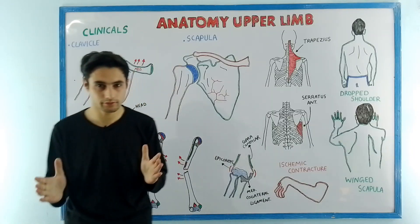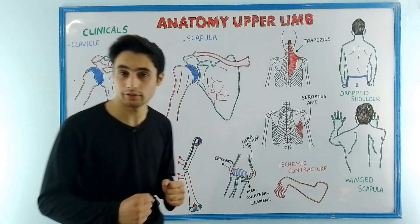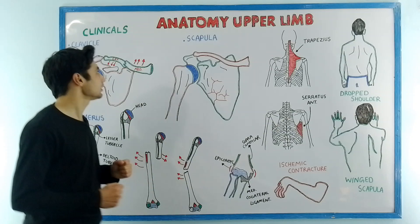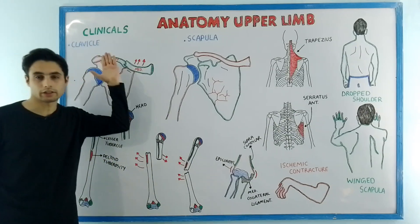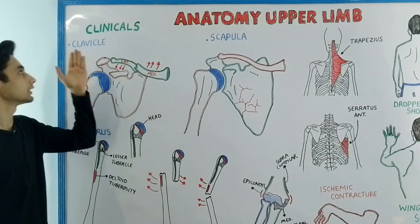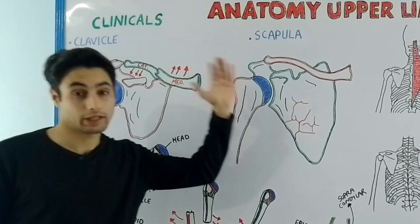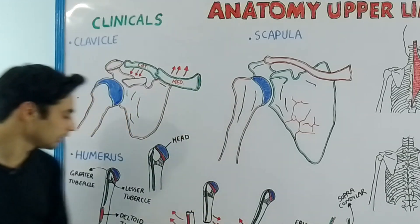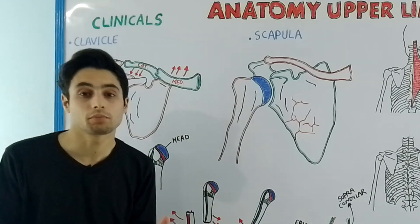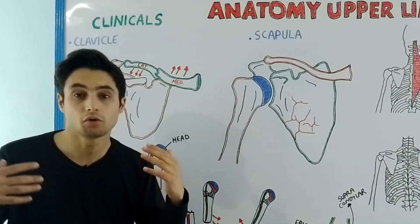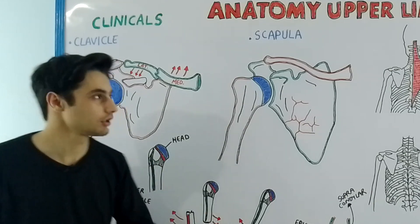Hey everyone, this is Dr. Kazee. In this video we are going to learn about the clinicals of the clavicle bone, the scapula bone, and the humerus bone. We are going to learn what happens when these bones are broken or get damaged.